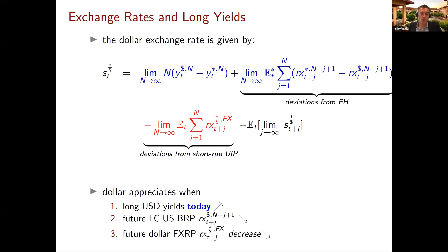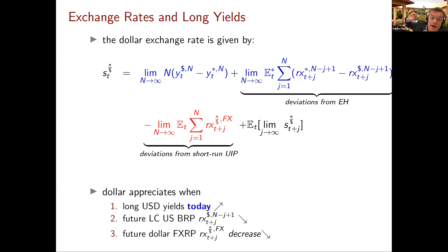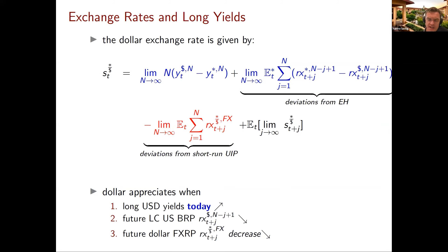The dollar also appreciates when the local-currency U.S. bond risk premium — which enters with a minus sign — goes down. And it appreciates when future dollar foreign currency risk premia decrease. Now you can see that currency markets and bond markets are really intertwined, and bond risk premia have a direct effect on the exchange rate. Suppose exchange rates are stationary — a natural assumption for real exchange rates. Then the second and third components exactly cancel out, and the deviation of the dollar exchange rate from its long-run mean is pinned down by long-term interest rate differences between, say, the U.S. and Germany.